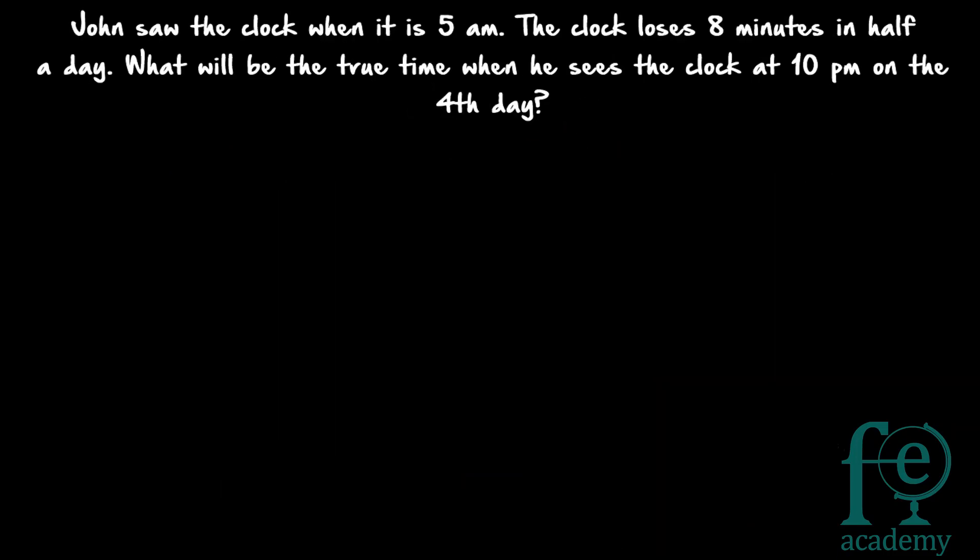Now the second question: John saw the clock when it is 5am. The clock loses 8 minutes in half a day. What will be the true time when he sees the clock at 10pm on the 4th day? So John is seeing the clock — the clock is set right at 5am. Then after that, the clock is losing 8 minutes in half a day, that means in 12 aways. You have to find the relation between wrong clock time and right clock time — that is the first step.